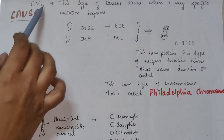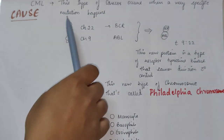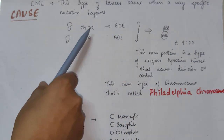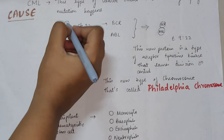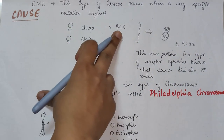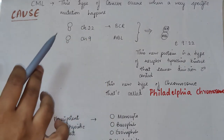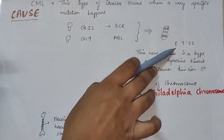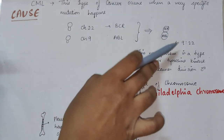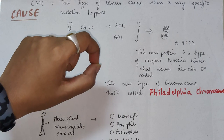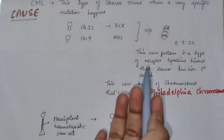Chronic myeloid leukemia occurs when a very specific mutation happens. There is chromosome 22, which is also called the BCR gene, and chromosome 9, which is also the ABL gene. What happens is there is a translocation of these two, and that leads to the mutation. This new protein is a type of receptor tyrosine kinase that causes division without control.